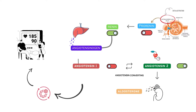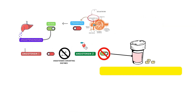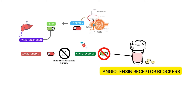ACE inhibitors work by cutting the chain in the RAS system, by inhibiting the effect of angiotensin-converting enzymes and preventing angiotensin-1 from converting into angiotensin-2. There is another class of antihypertensive drugs which inhibit the effect of angiotensin-2 and vasoconstriction by blocking the receptors which angiotensin-2 binds to. These drugs are called angiotensin receptor blockers, or ARBs. In the next video, we will look into the ARB antihypertensive drugs used in clinical practice, along with their mechanism of action and significance.